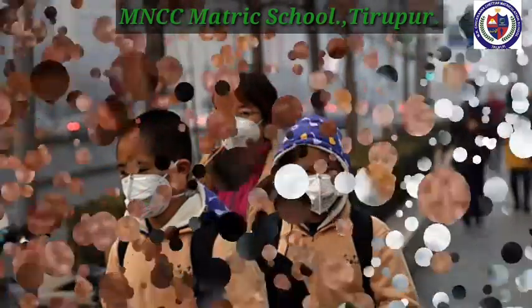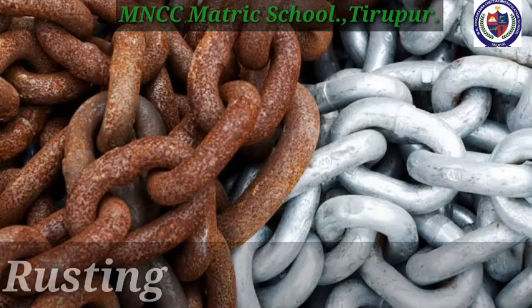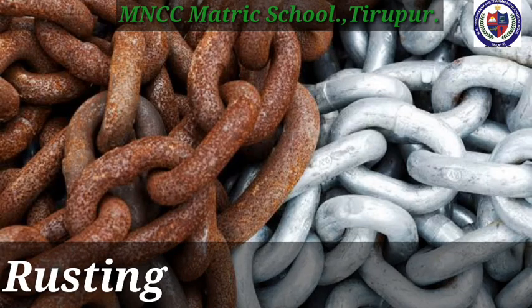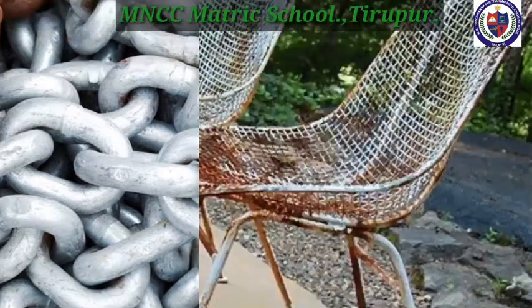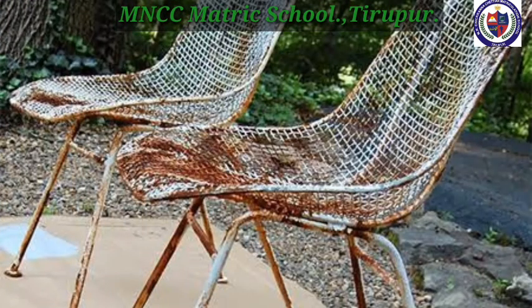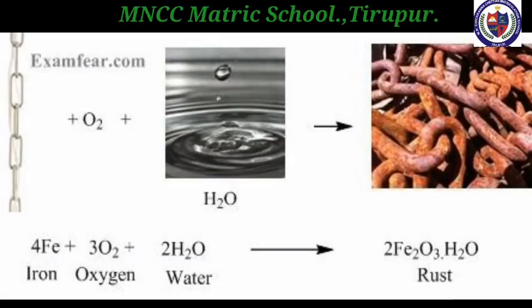Next we move to rusting. Iron materials come into contact with water and oxygen and undergo a chemical reaction called rusting. The equation is: iron plus oxygen plus water results in the formation of rust. See the image.